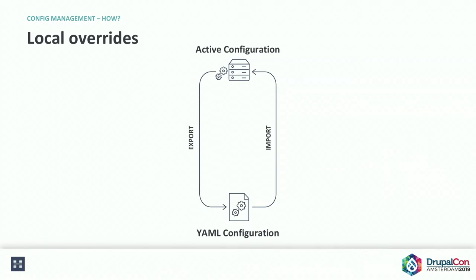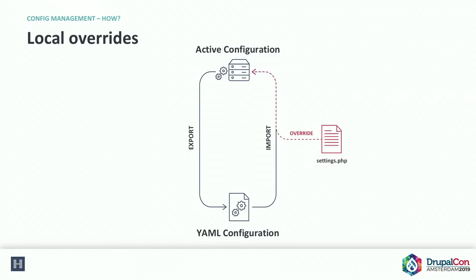Taking a step back and looking at this conceptually: config has two things — active configuration that exists in our database, and file system configuration with all of our YAML. But there are things we want to be specific to our environments, and there are two ways to create local overrides. Most people perceive local overrides as putting something in settings.php, and then when you do your import it somehow gets overridden. But this isn't actually the way it works.